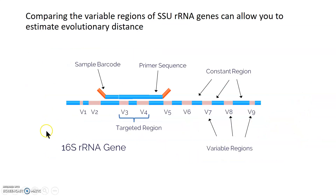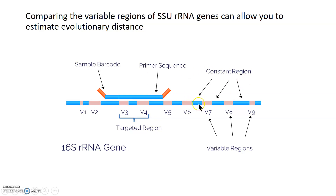Here is a picture of the 16S rRNA gene. The gene itself is made up of a series of constant regions, shown in blue, and variable regions, shown in peach. The constant regions remain constant between every organism — every type of bacteria will have the same DNA sequence in these blue constant regions for this 16S gene.